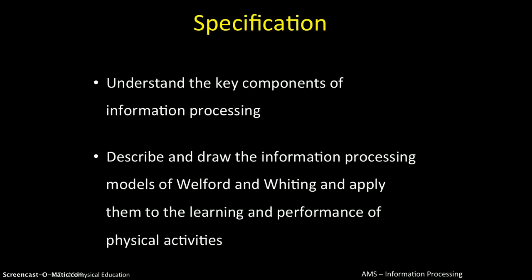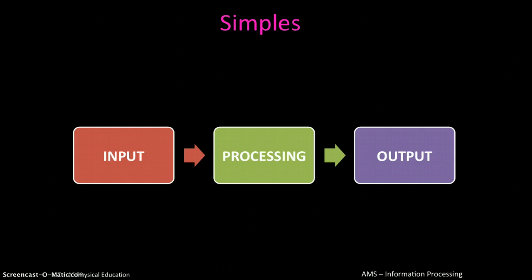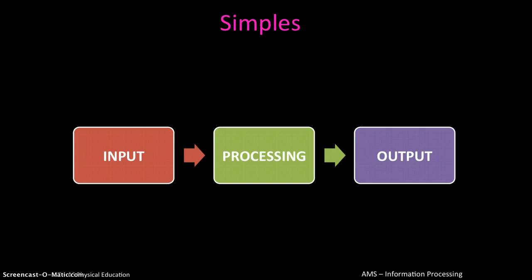In the most simple terms, information processing involves information input — information coming into your body and brain. You then have a processing period where you take in that information, make sense of it, recognize it, and ultimately make a decision. From that decision, you send messages to your muscles to perform a certain motor program or skill movement — that is your output. So basically: take information in, process it, make a decision, and move.